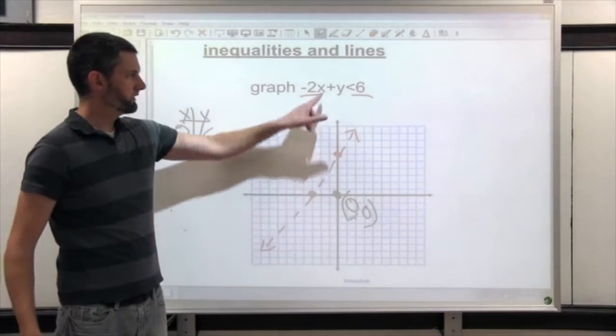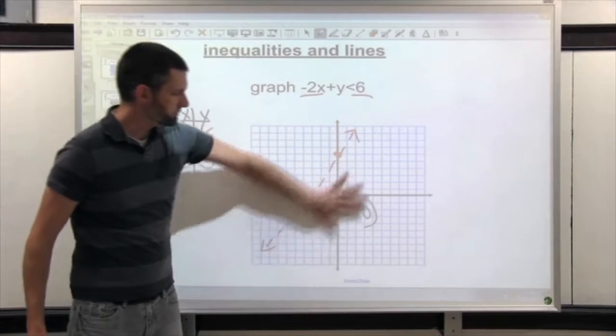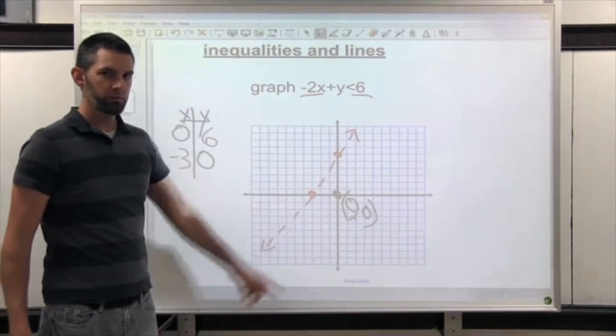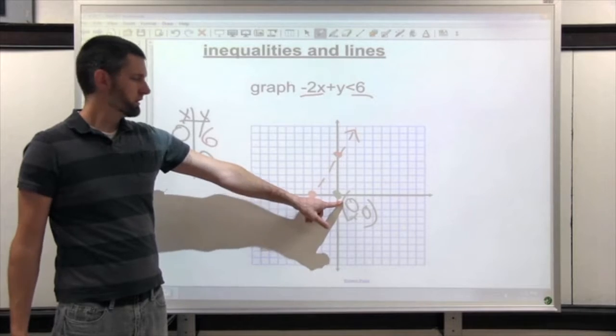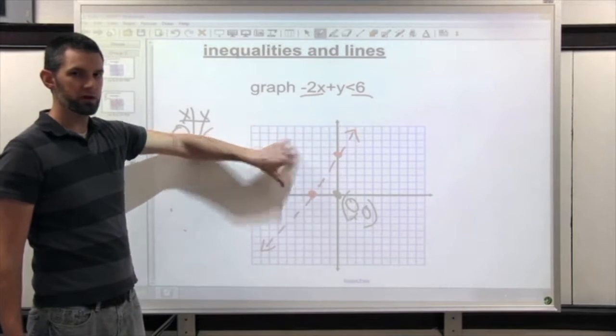Now if I try this point in here and it works, I'm going to shade the side that it's on. But if I try it and it doesn't make it true, it doesn't work, then I'm going to shade the other side.